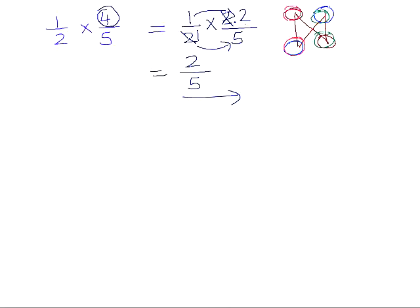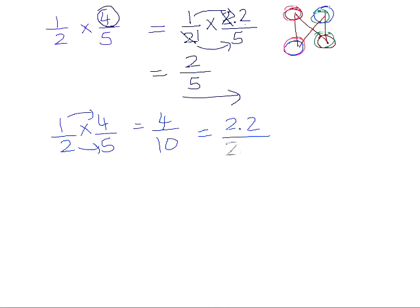The other way to do this would be to first multiply: multiply 1 by 4 and 2 by 5, then simplify the resulting fraction. So 4 is 2 times 2, 10 is 2 times 5, divide both by 2, and we're left with 2 fifths as our final answer.